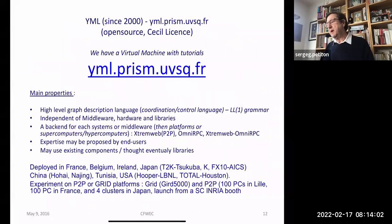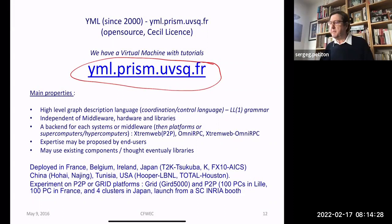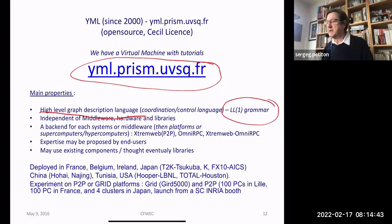YML was launched with this kind of idea approximately 22 years ago. It's open source — you can find everything on the website. There is also a Docker image which is being improved, and it will soon be possible to deploy YML very easily. The idea is to have a high-level graph description language. I will introduce the main idea of this language called Yvette, which has an LL(1) grammar, so it's very easy to parse. The language needs to be completely independent of the middleware, the hardware, and the library — so we have a frontend and a backend.